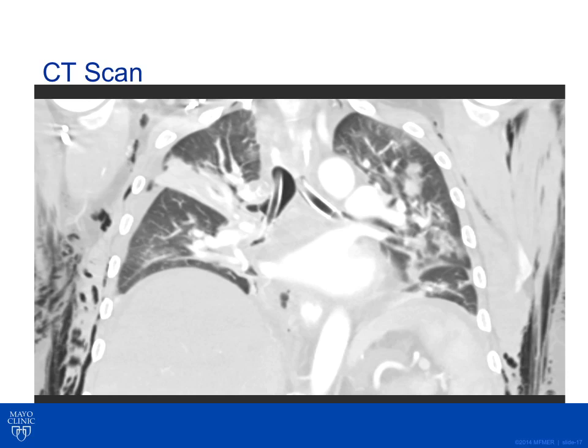A CAT scan was performed with bilateral mainstem bronchial intubation. This can be seen best on the coronal view, where each endotracheal tube is seen with the positioning of the balloon cuff. The cuff can clearly be seen to occlude the right upper lobe takeoff, causing some collapse and atelectasis of the right upper lobe. However, the remaining lungs appear well ventilated.